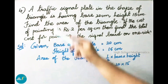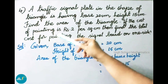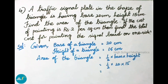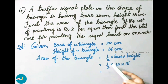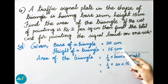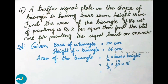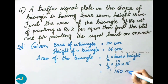See now question number 4. A traffic signal plate in the shape of a triangle has base 20 cm and height 15 cm. Find the area of the triangle. Area equals half into base into height, that is half into 20 cm into 15 cm. After cancellation, we get 10 into 15, which is 150 square centimeter.